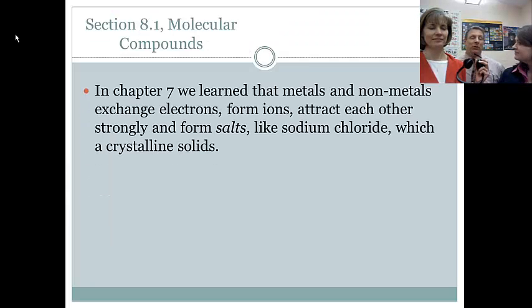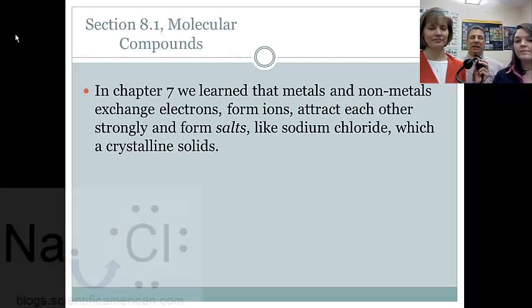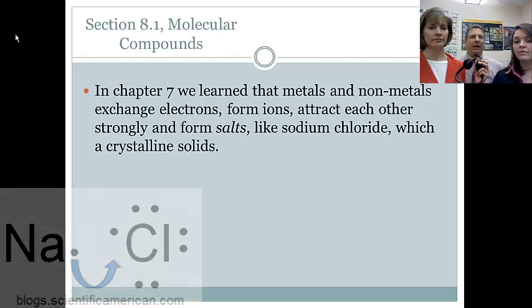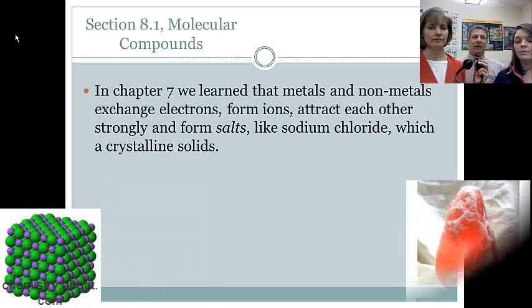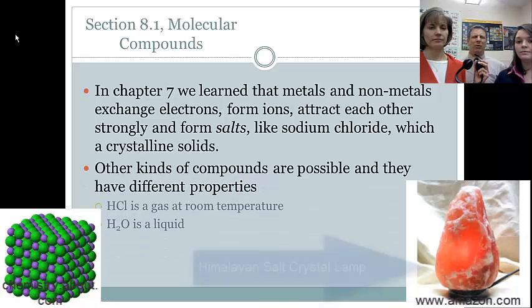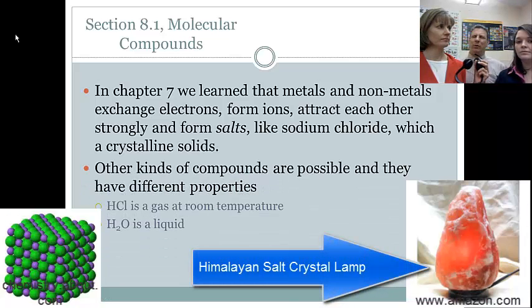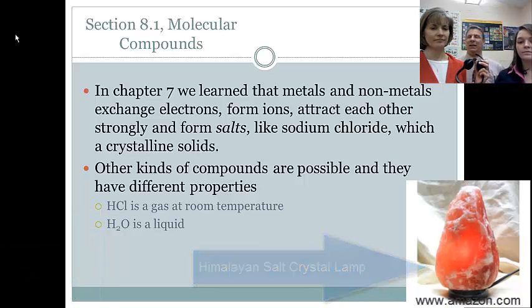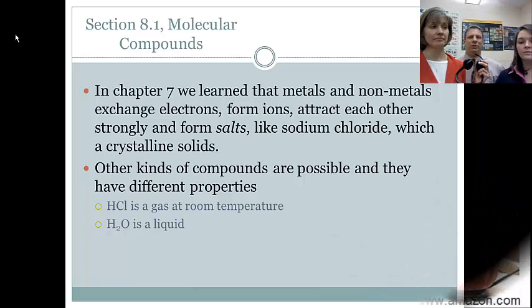In previous chapters we learned all about ionic bonding and how electrons are transferred from a metal to a nonmetal to form a family of chemicals called salts. They're always crystalline solids. They have really high melting points and really high boiling points. But there's a whole bunch of other chemical compounds that aren't like that at all, like hydrochloric acid or hydrogen chloride.